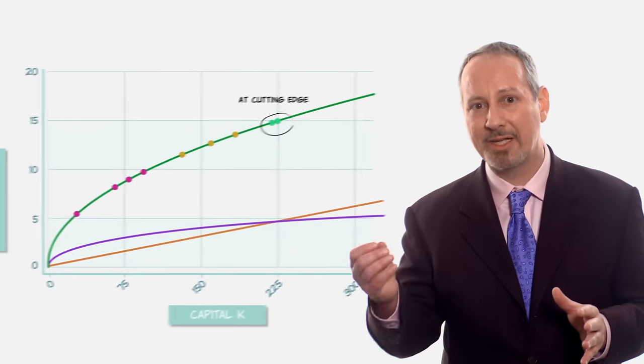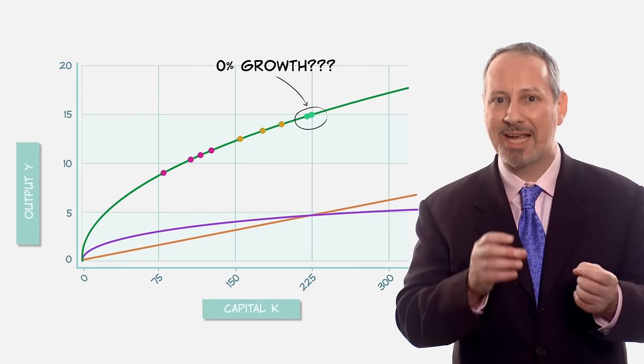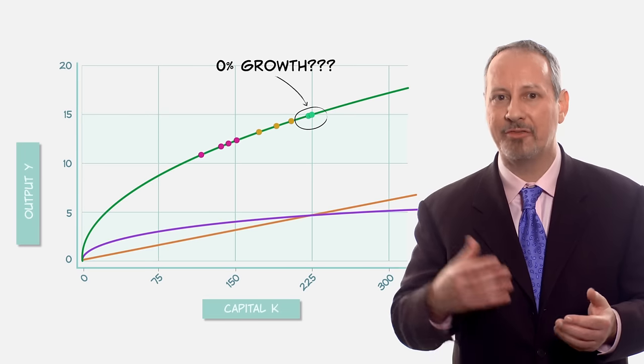However, for the wealthiest countries in the world, those are the cutting edge. This model of capital accumulation fails to explain how you keep growing, albeit at a slower pace. So how do we explain growth at the cutting edge?